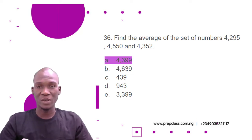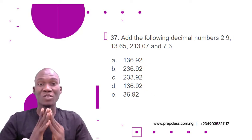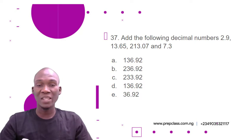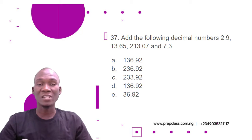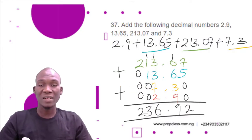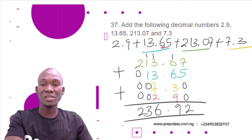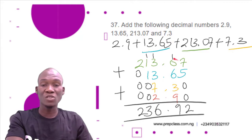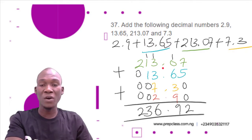The correct option is A, 4,399. Now question number 37: Add the following decimal numbers — 2.9, 13.65, 213.07, and 7.3. We arrange these numbers so that the decimal points align directly under each other, starting with the biggest: 213.07, then 13.65, then 7.3, then 2.9.